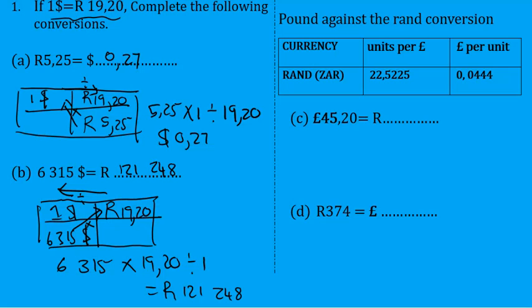All right, for Grade 12s, exchange rates can also be presented as it is on the right. Let me show you how to deal with it if it's presented like this. Notice that you've got two columns: one has units per pound, so units of rand per pound, and the other has pounds per unit of rand. The two are just the opposite of one another.